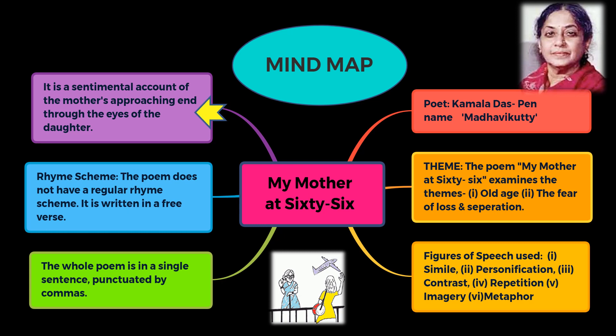It is a sentimental account of the mother's approaching end through the eyes of the daughter. The poem is written in free verse and expresses the anguish of a daughter over her mother's advancing age and the fear of permanent separation from her. The poem examines the themes of old age and the fear of loss and separation. The whole poem is a single sentence punctuated by commas.